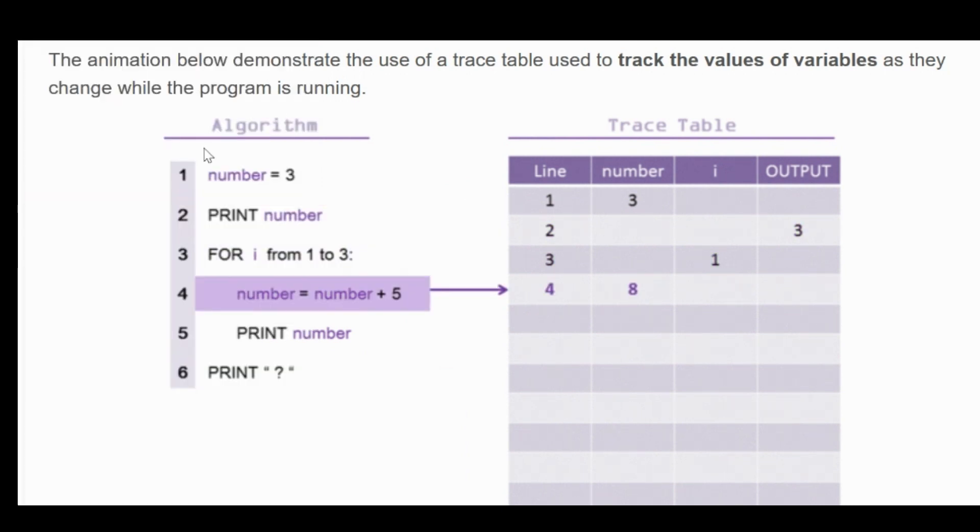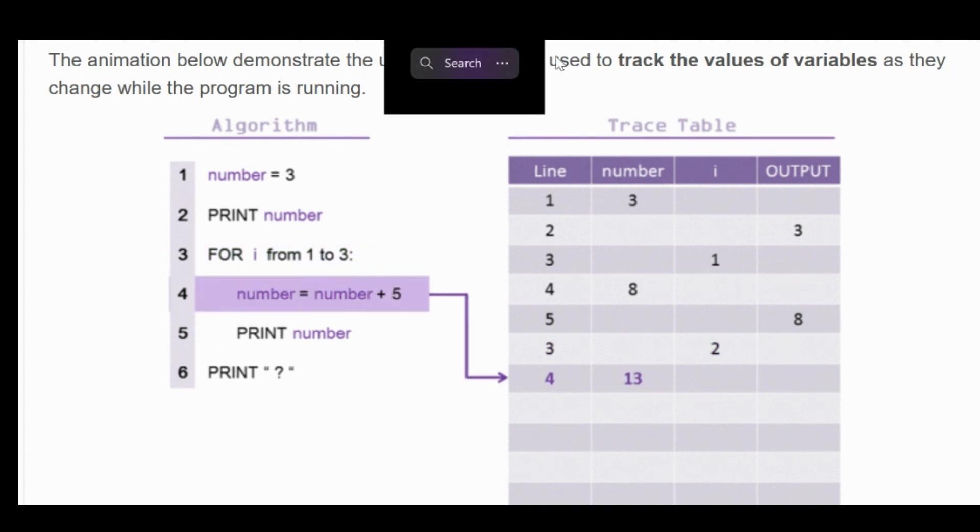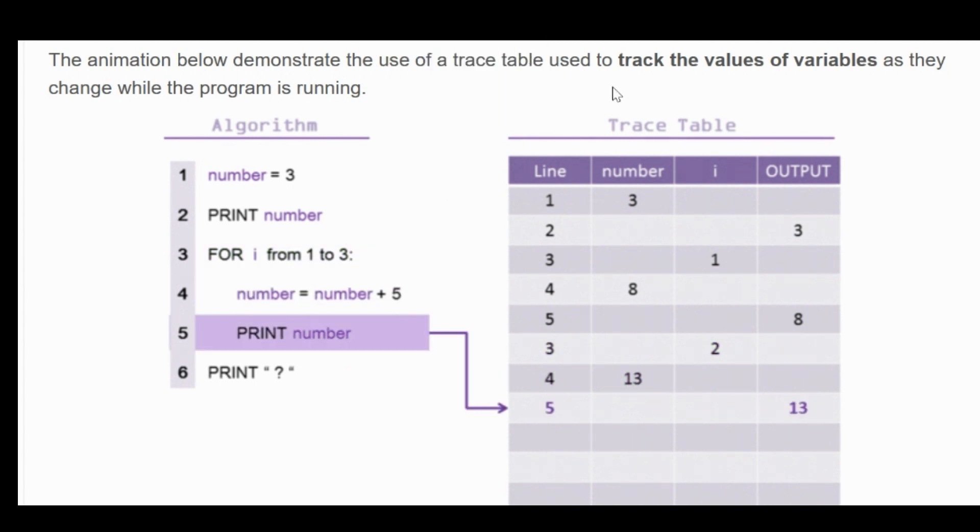So what the whole idea of a trace table is, is you're tracing the value that you're looking for. You're tracking the value of the variable as it changes as you do stuff to the variable.